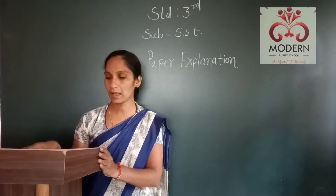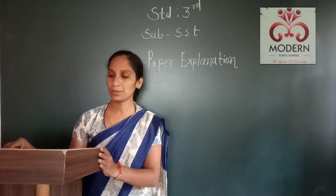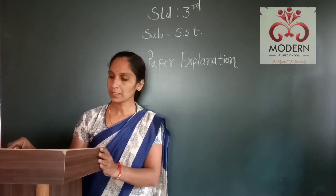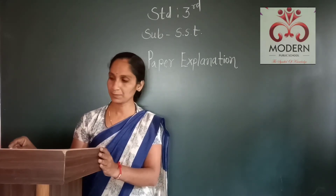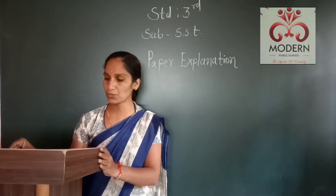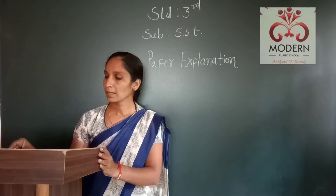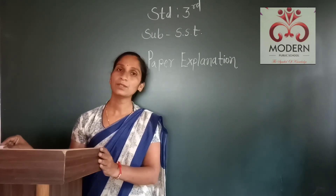Seventh one: [blank] are flat and fertile lands — options: mountains, plains, deserts, islands. Eighth: [blank] is the capital of Gujarat — options: Panji, Srinagar, Gandhinagar, Ahmedabad.